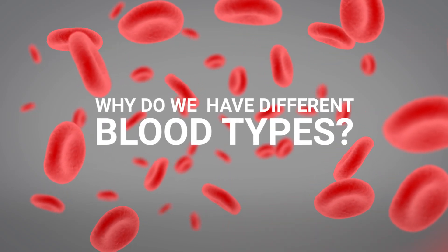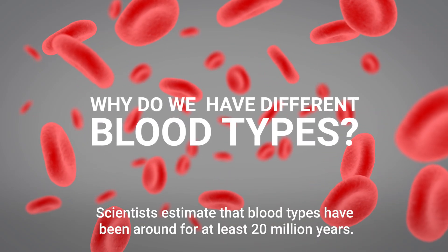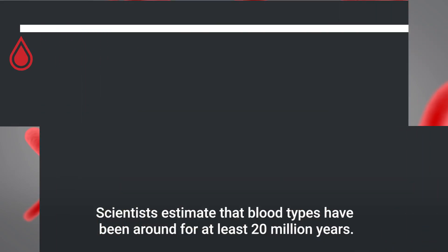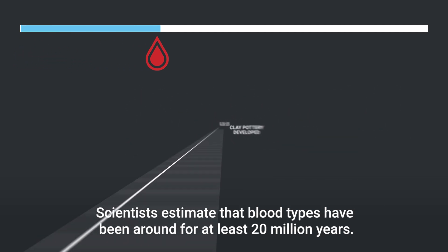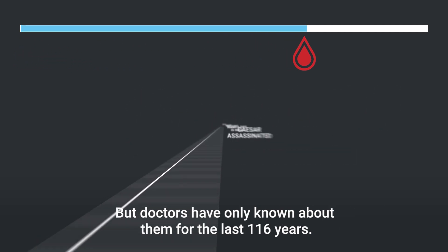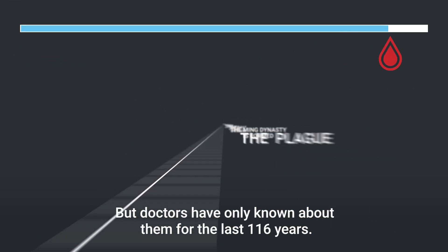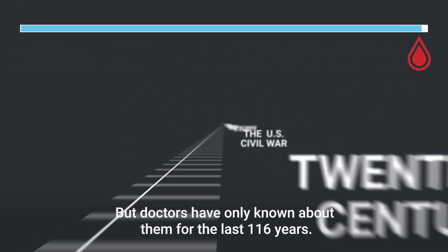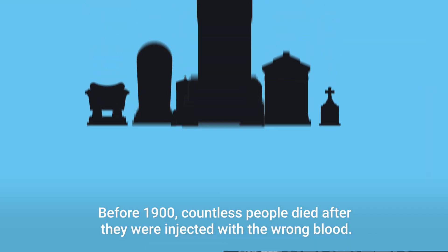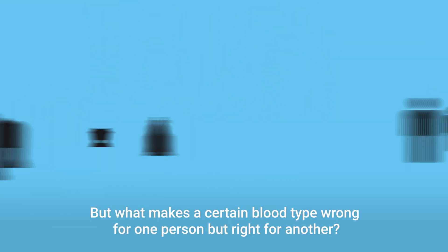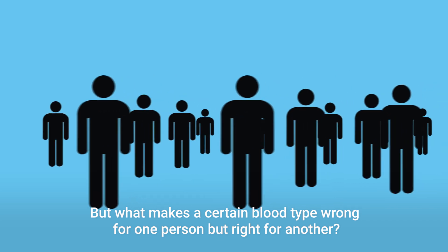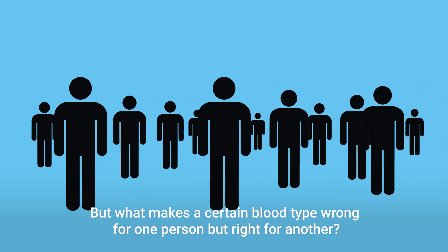Why do we have different blood types? Scientists estimate that blood types have been around for at least 20 million years, but doctors have only known about them for the last 116 years. Before 1900, countless people died after they were injected with the wrong blood. But what makes a certain blood type wrong for one person, but right for another?